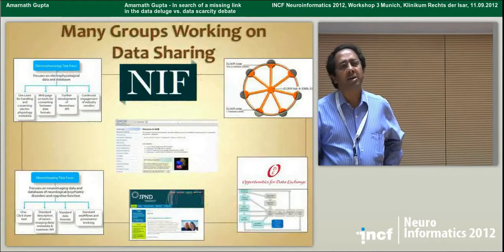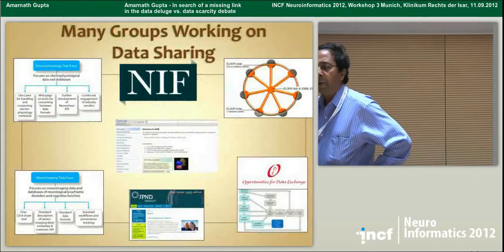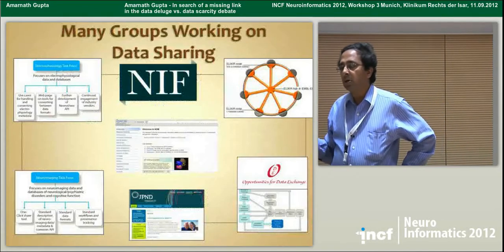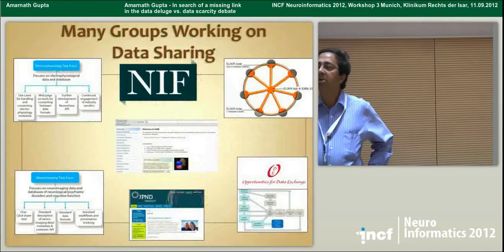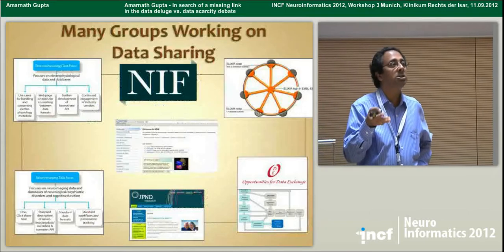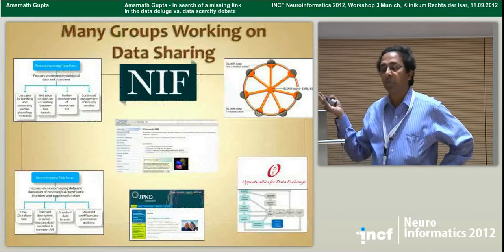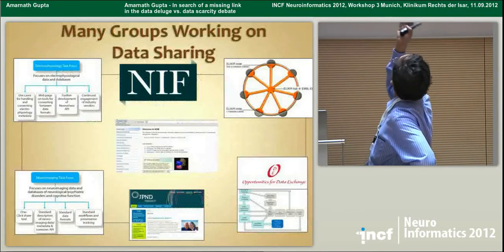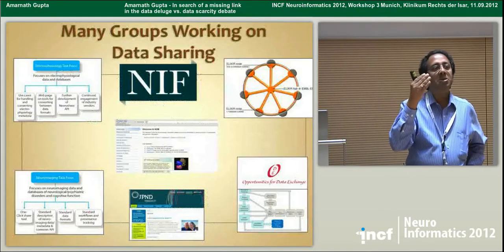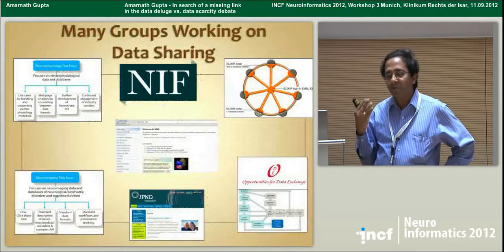There are many groups today looking at different parts of the problem. We mentioned NIF. INCF is working on standards and tools. There is also a project called Elixir, which is looking at architectures of how a multi-institution system would work in terms of providing data, providing indexes, providing services, and computations. The opportunity for data exchange looks at the requirements of every stakeholder in the data-sharing enterprise — you should go read their reports because they are very insightful.